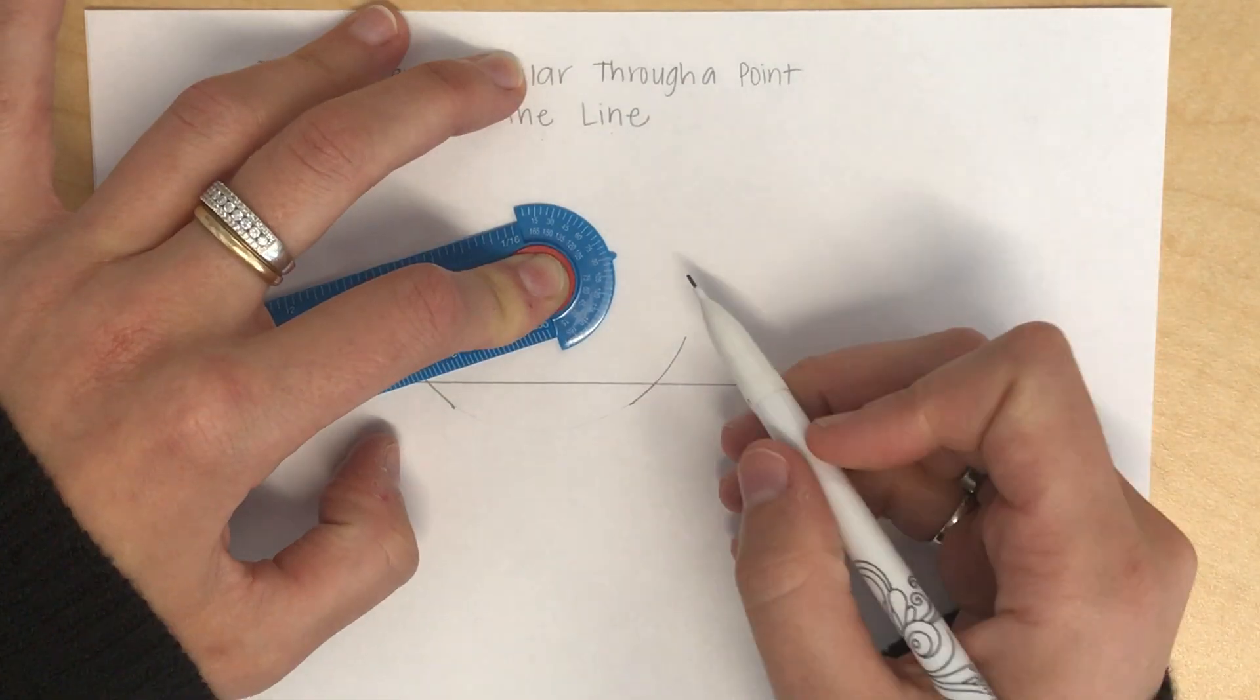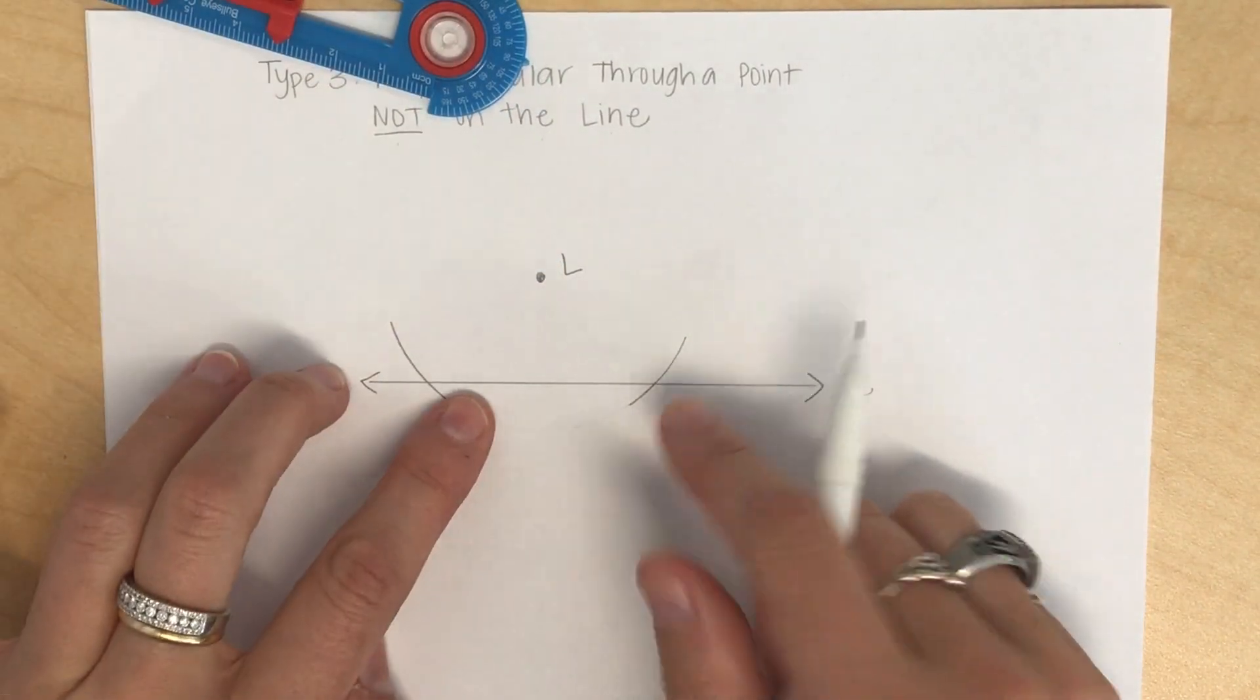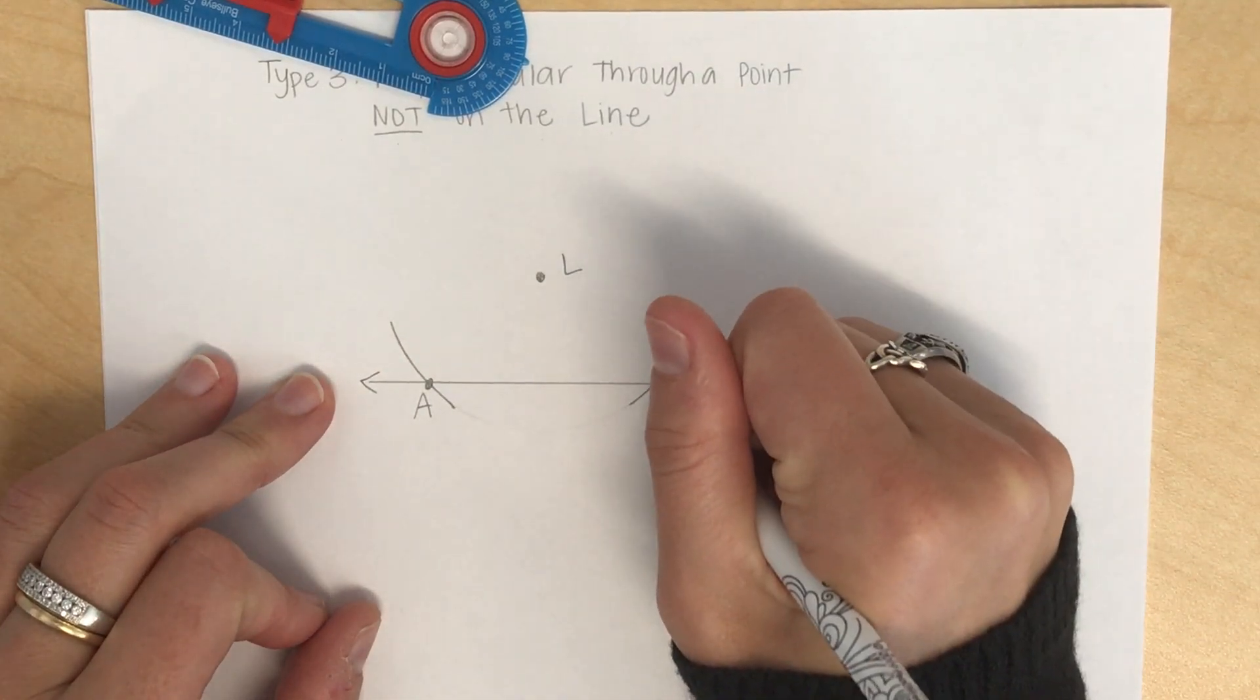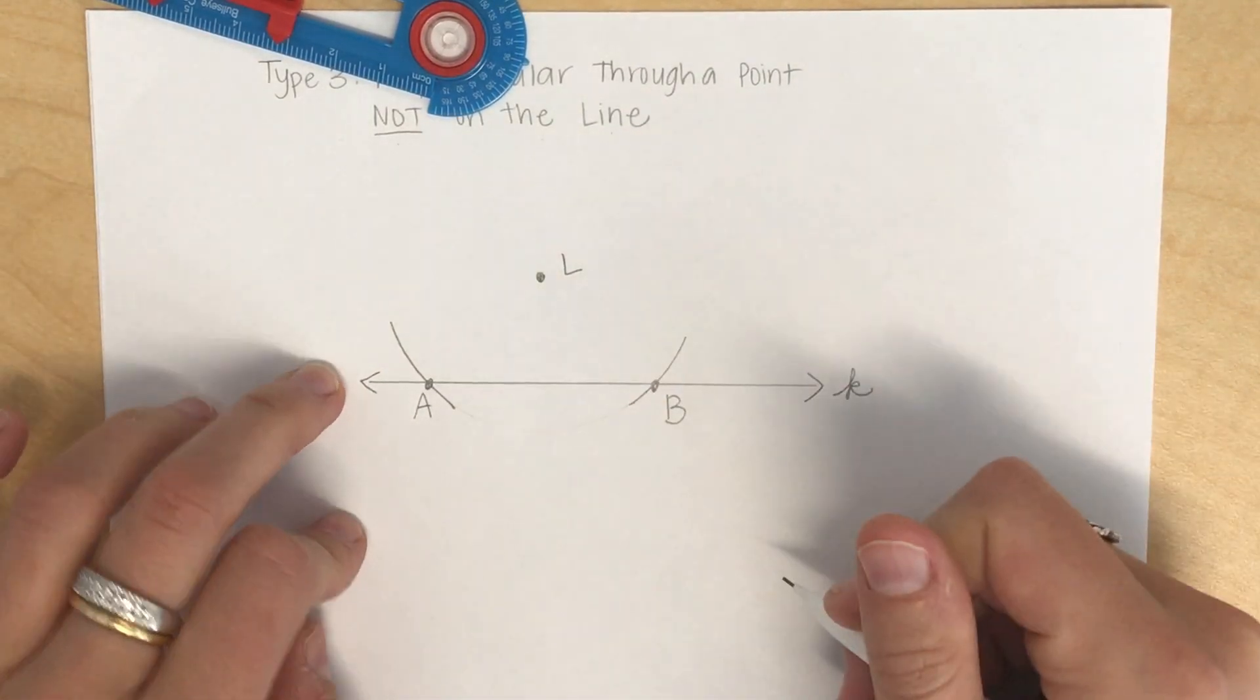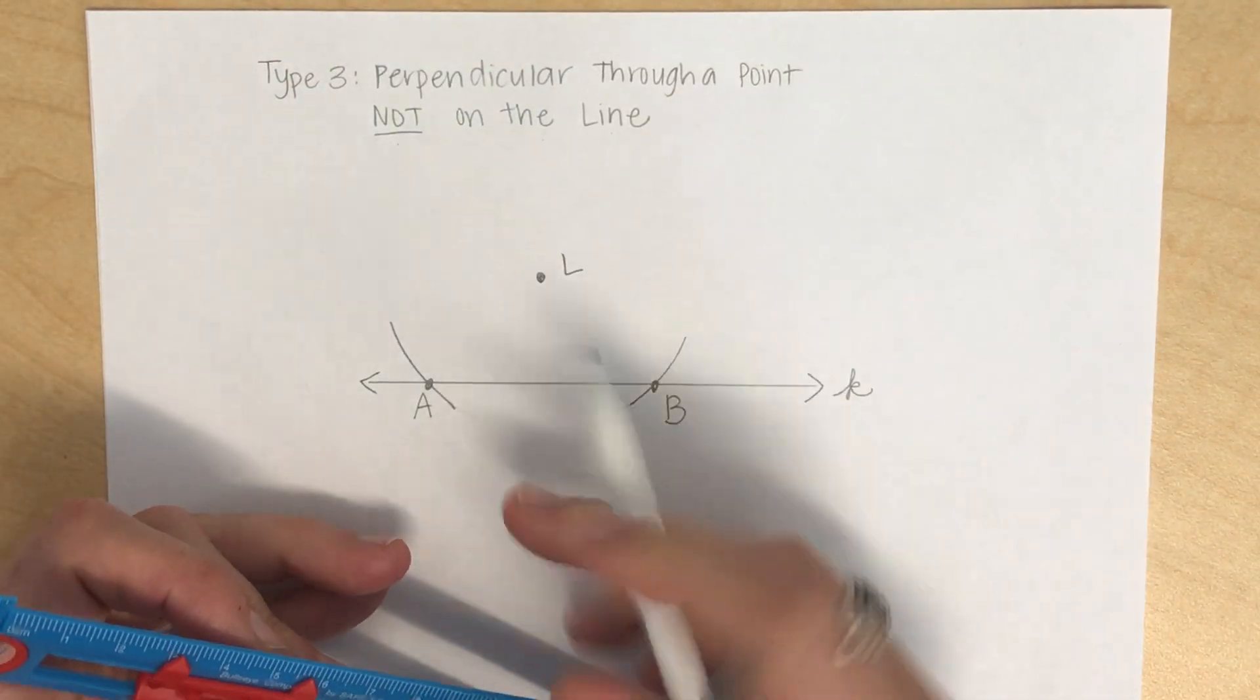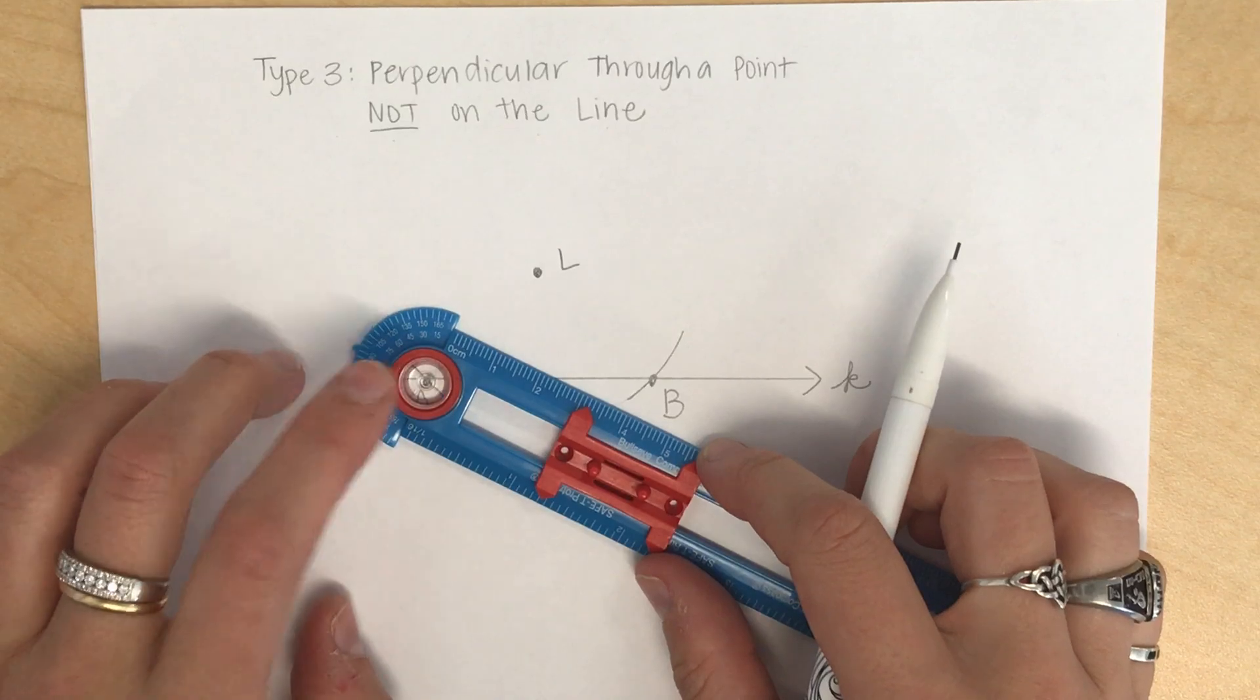I'm now going to label my intersection points as point A and point B. Next step, I'm going to place my compass at point A, so it's right on A.